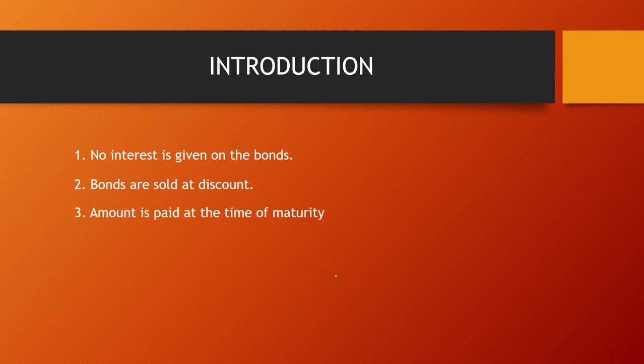The third feature is that the amount is paid at the time of maturity. Whatever the face value is, that will be paid at maturity. If you have purchased a zero coupon bond of 10 years with a face value of Rs. 1000, from year 1 till year 10 you are not going to get any interest — you will only get Rs. 1000 at the end of the 10th year.